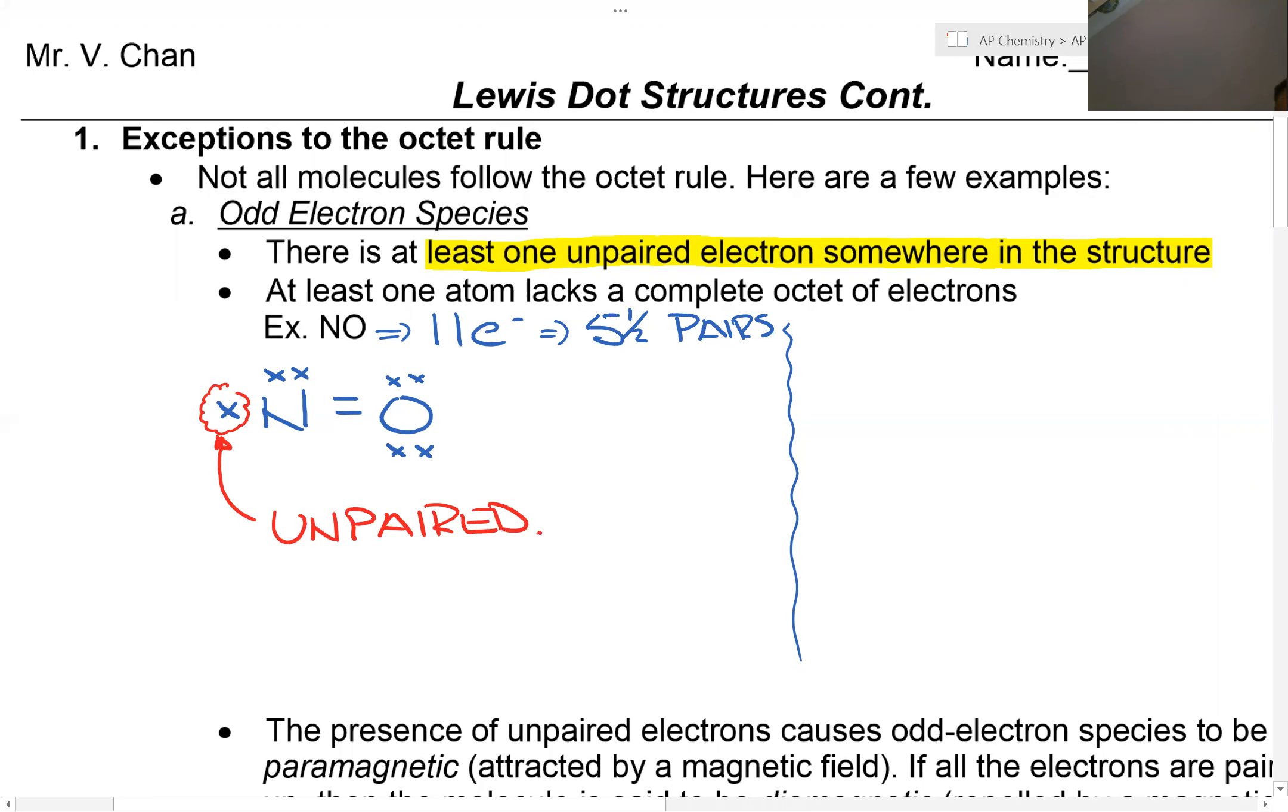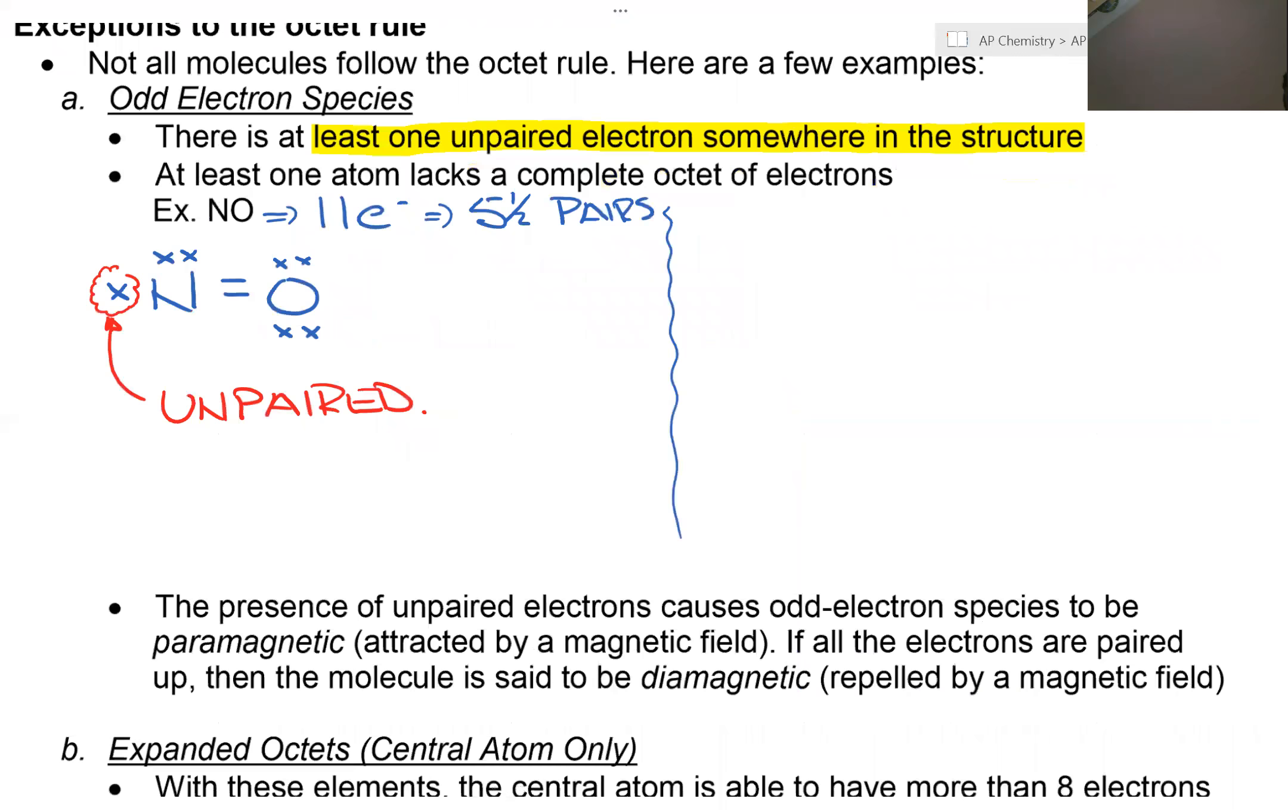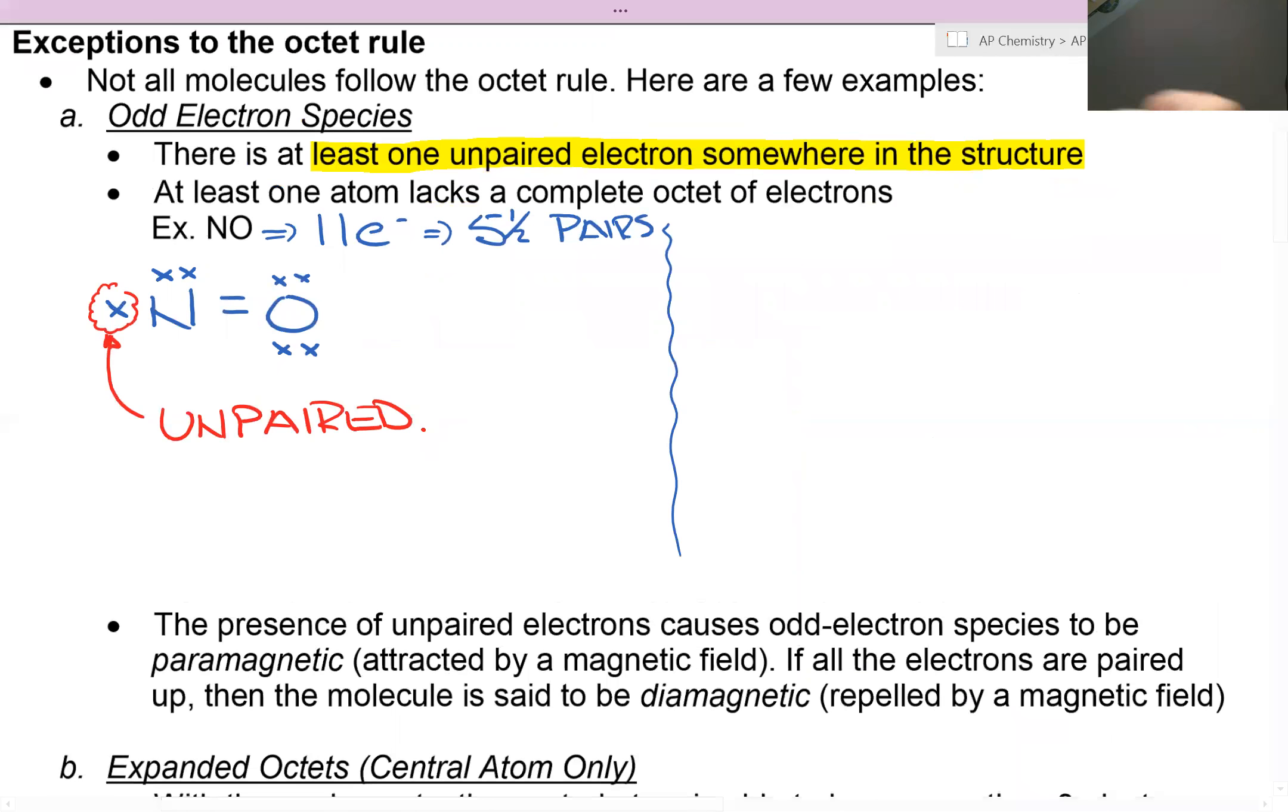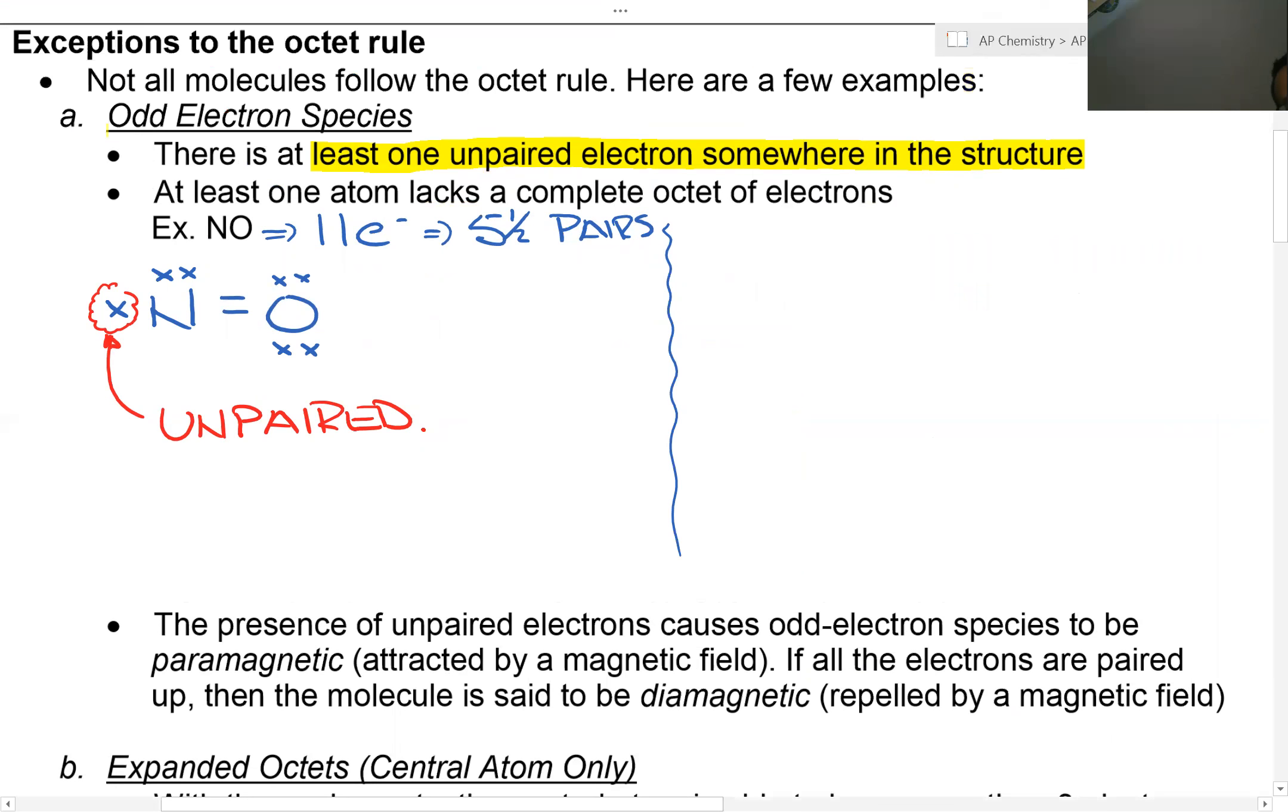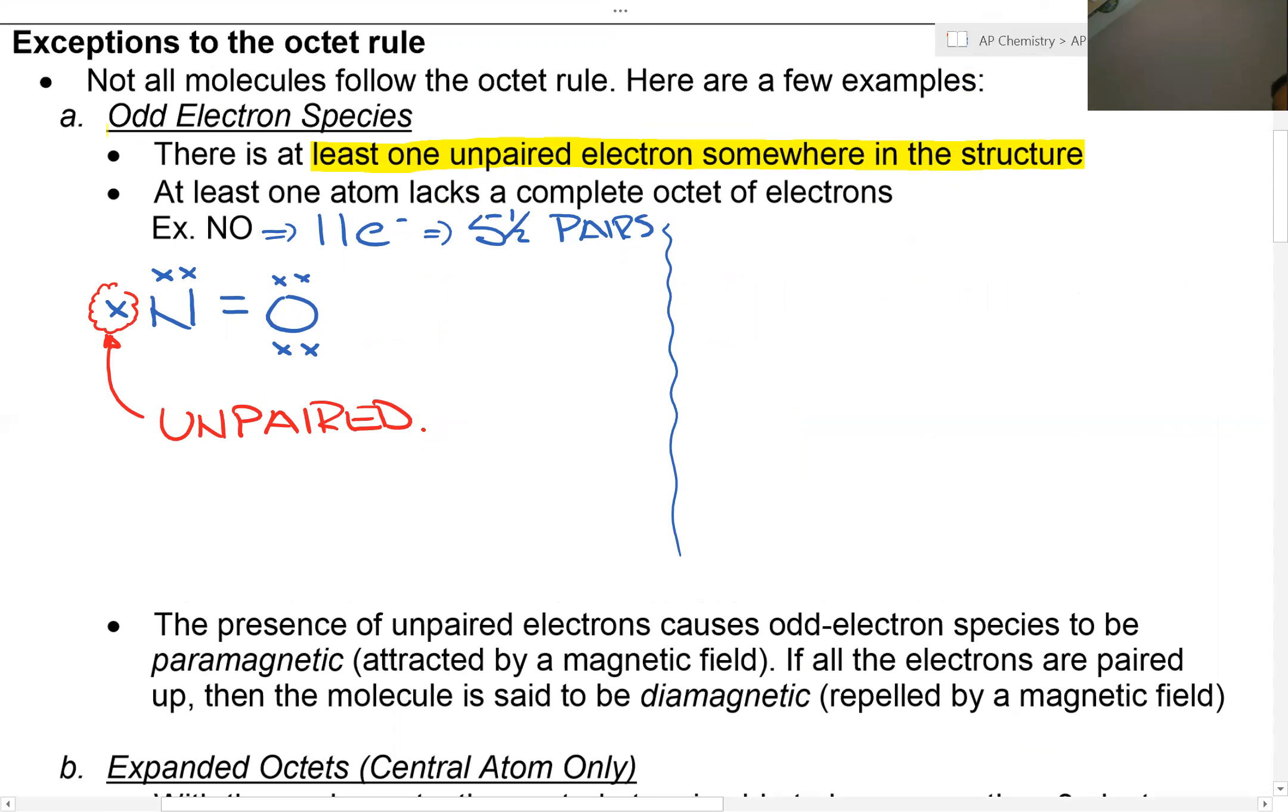Now what's the significance of this unpaired electron? The presence of an unpaired electron causes odd electron species to be paramagnetic, meaning it's affected by a magnetic field. If the electrons are all paired, then the molecule is said to be diamagnetic, repelled by a magnetic field.